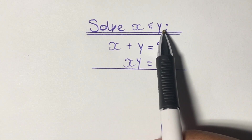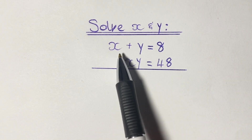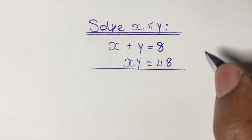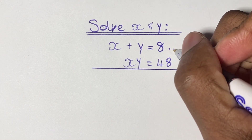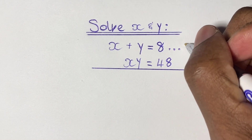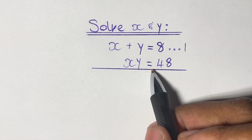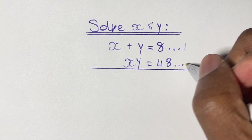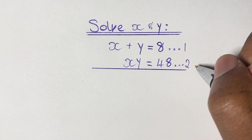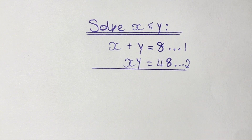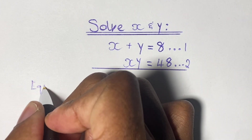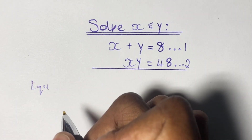Greetings again everyone. Here we have another complex simultaneous equation to solve. We have x plus y is equal to 8, which is equation 1, and in the other equation we have x times y is equal to 48, so this is equation 2. As you can see, our solution for x and y is going to be complex, so please stay tuned with me to the end of this video until we solve our equation.